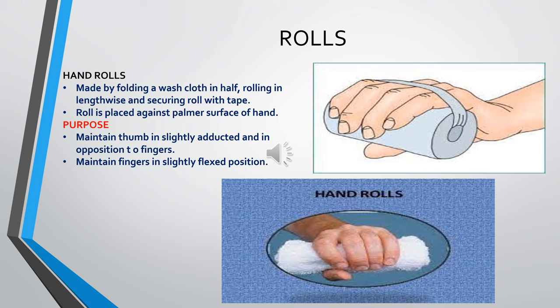Another commonly used comfort device is hand rolls. Hand rolls are made by folding a washcloth in half, then rolling the cloth lengthwise and securing it with tape. The roll is placed against the palm or surface of the hand. Its main purpose is to maintain the thumb in a slightly adducted position and to maintain fingers in a slightly flexed position. Hand rolls can be ready-made or you can prepare them yourself.